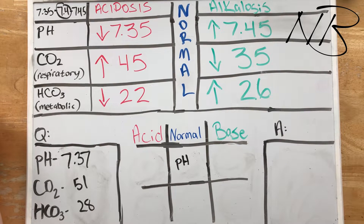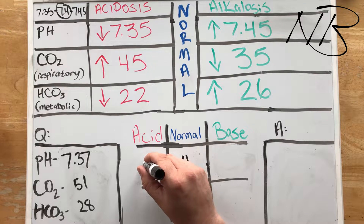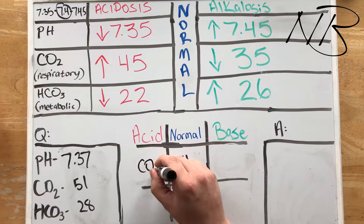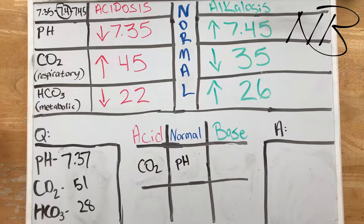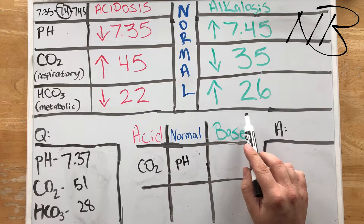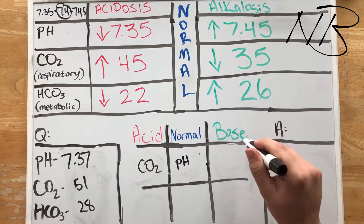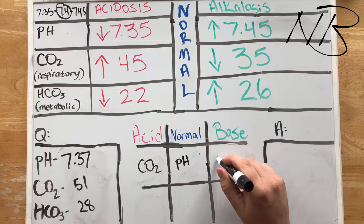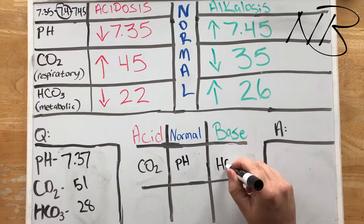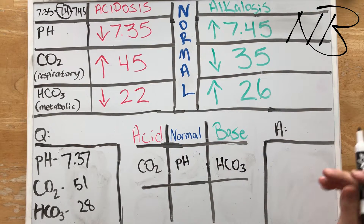CO2 is 51, and a CO2 of 51 is acidotic, so our CO2 is going to go in the acid column. Our bicarbonate is 28 — now 28 is above 26, so our bicarbonate is going to fall in our alkalosis column.